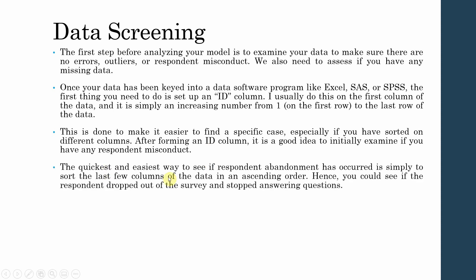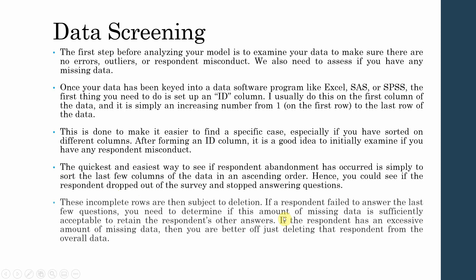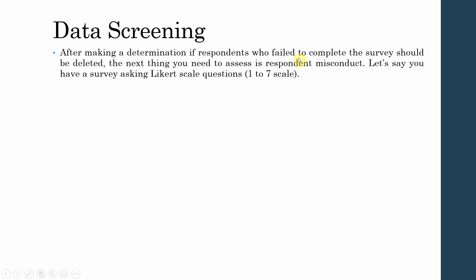The quickest way to see if a respondent abandoned your questionnaire is to sort the last few columns of the data in ascending order. You can then see if the respondent dropped out of the survey and stopped answering questions. These incomplete rows are subject to deletion. If the respondent failed to answer the last few questions, you need to determine if the amount of missing data is acceptable to retain their other answers. For example, if they only missed one or two questions there is no point deleting the whole response, but if they missed 40–50% of the questionnaire, you can delete that particular response.